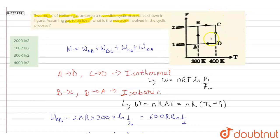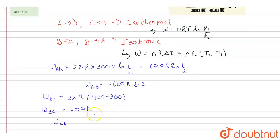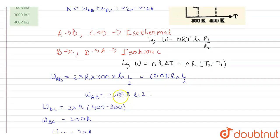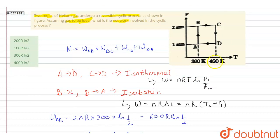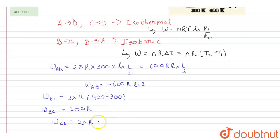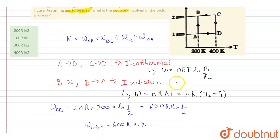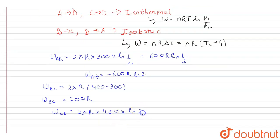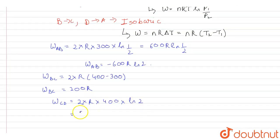Work done from C to D: this is again an isothermal process. So W_CD = 2 × R × 400 × ln(2/1) = 800R ln 2.